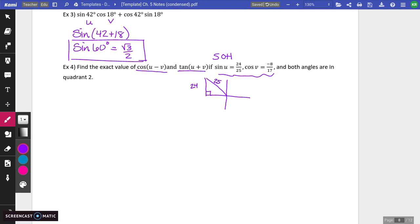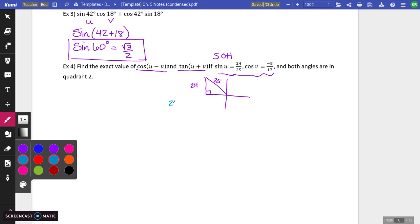And then you'll use the Pythagorean Theorem to find your other side. So you're going to have 24 squared plus, I'm just going to call this side x squared, equals 25 squared. So this is 576 plus x squared equals 625. x squared is 49, x is 7. So this is actually a Pythagorean triple. So this side is going to be 7.